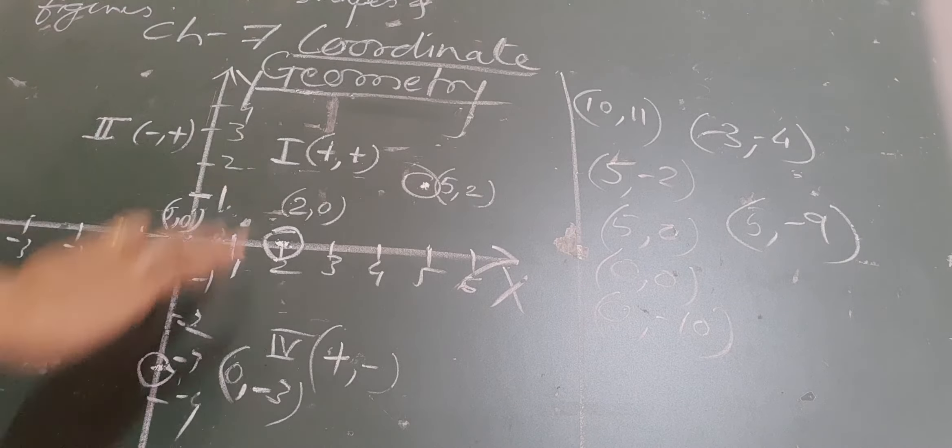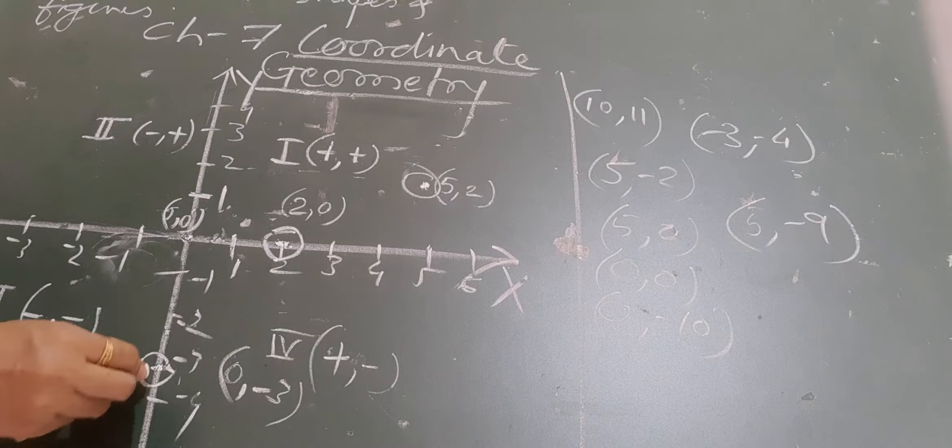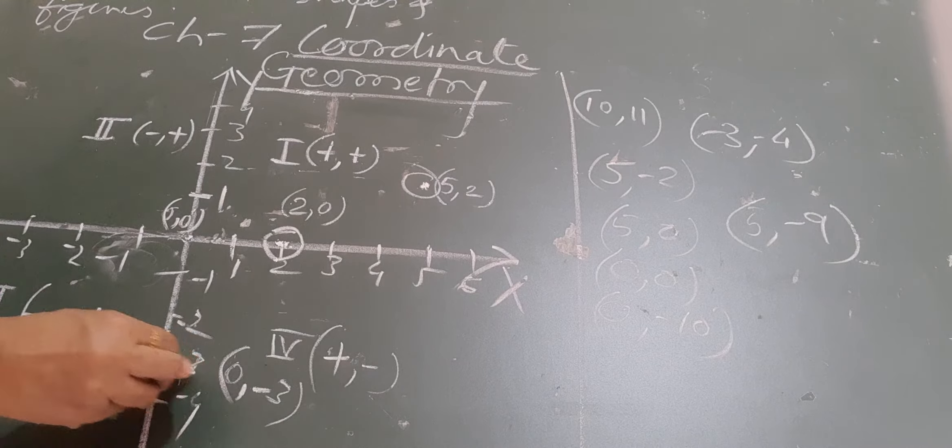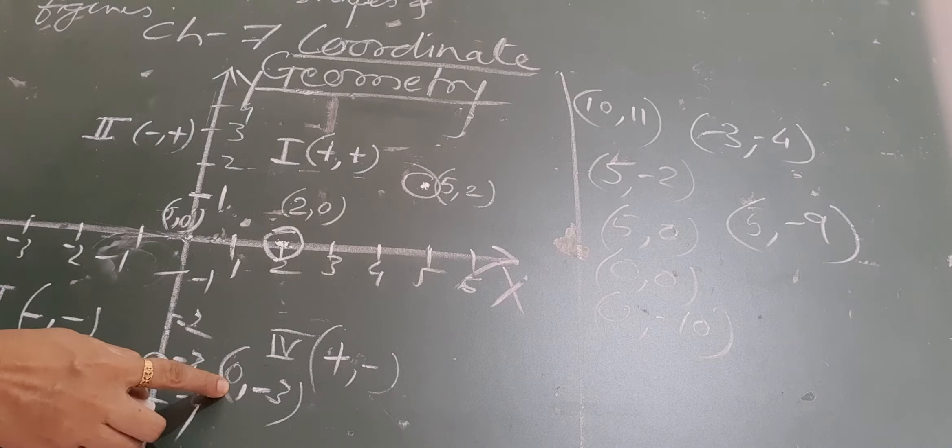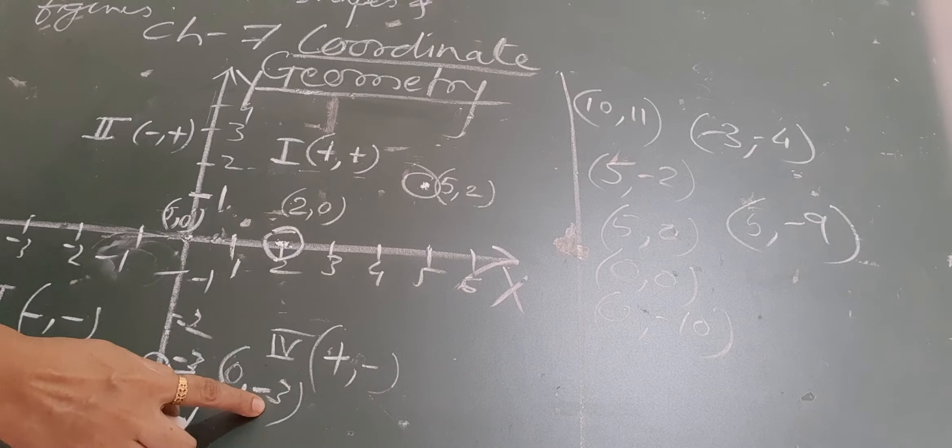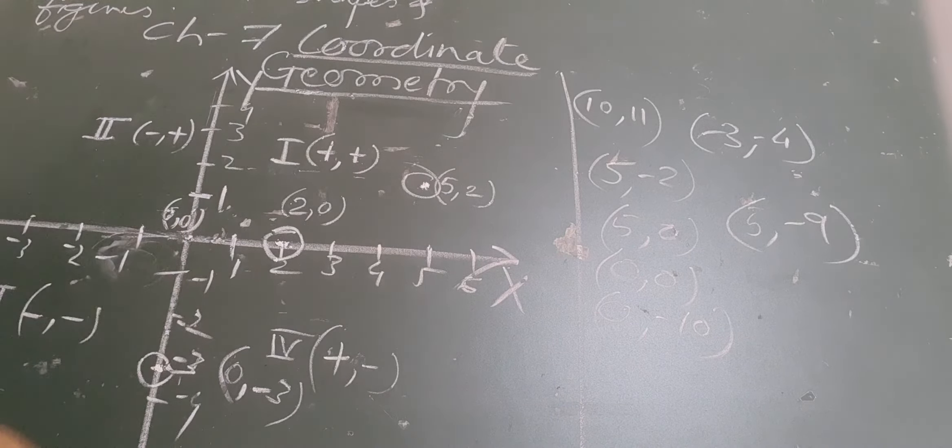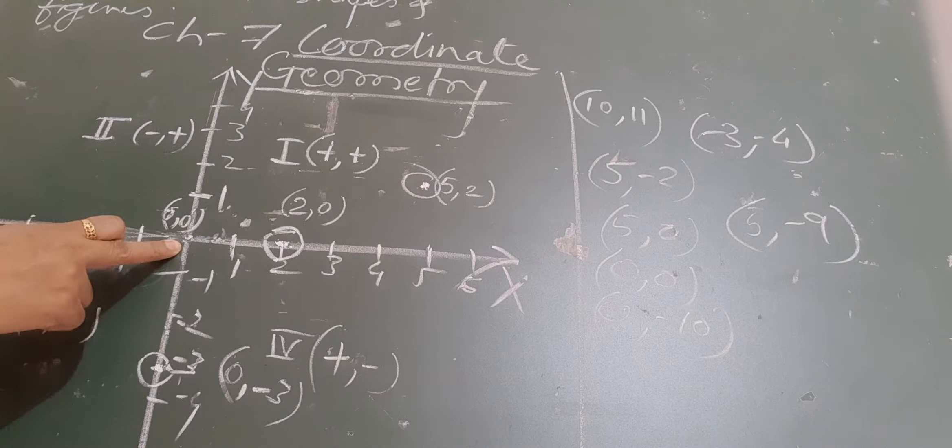If any point is on the y-axis, let us consider this point. Here the x coordinate is 0. Where both axes intersect, that is the origin, where both coordinates are 0.